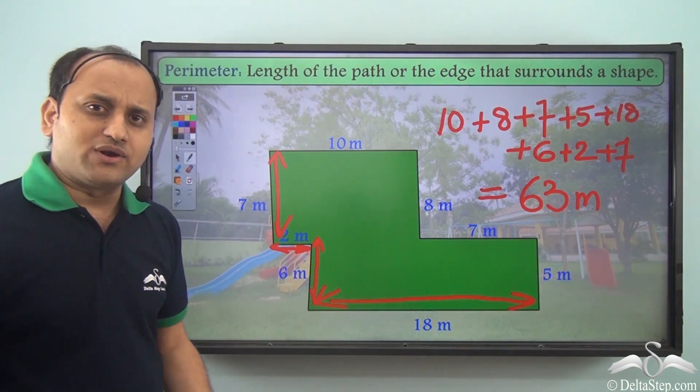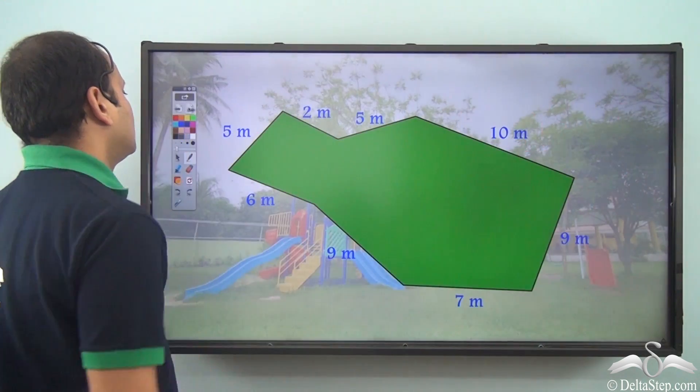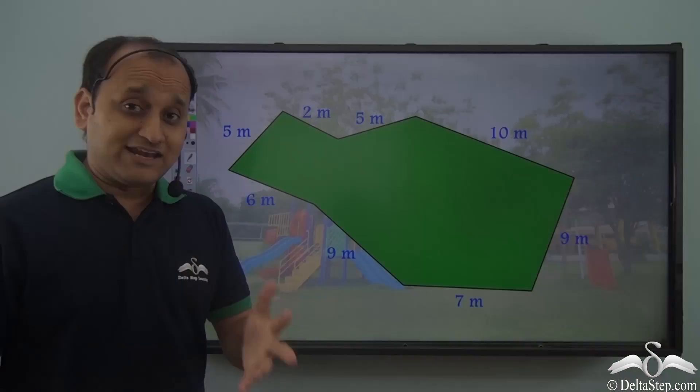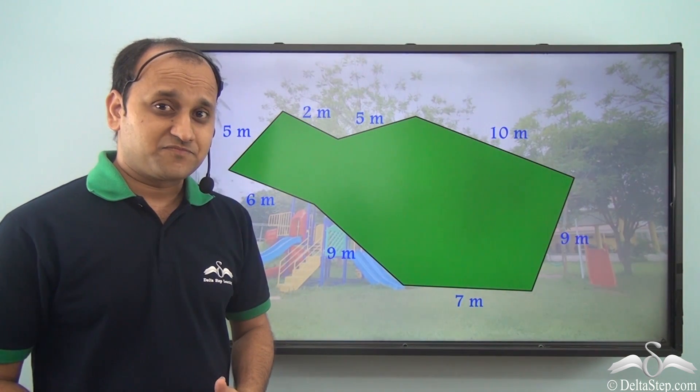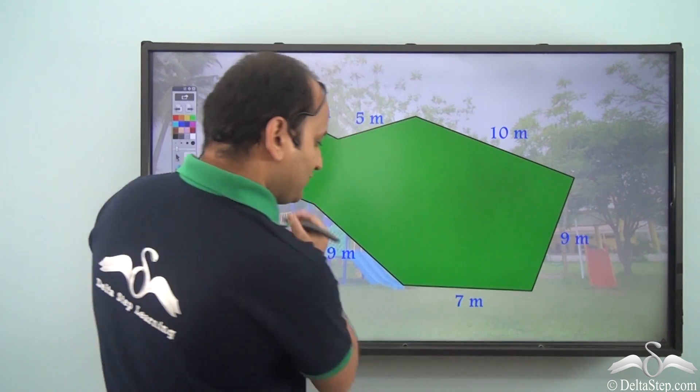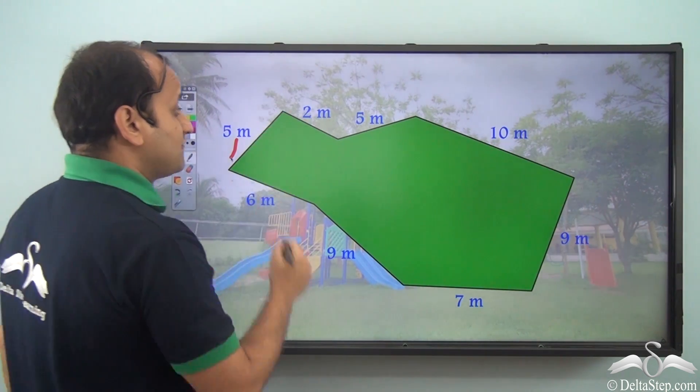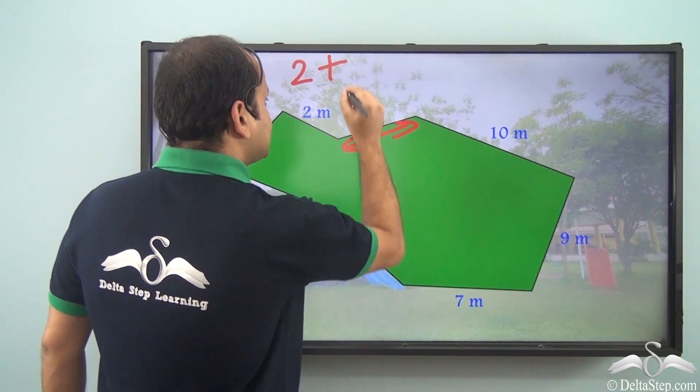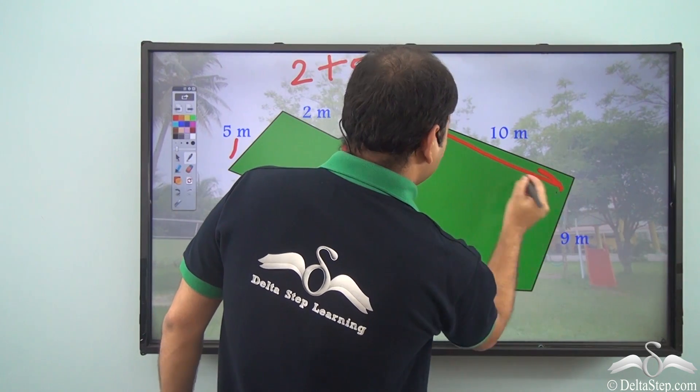So now that you know what is perimeter of a shape, can you find the perimeter of this particular shape? What do you think will be the answer? Well, let's calculate. It will be nothing but sum of all the sides, that is sum of length of all the sides. So we have 2 plus 5 for this, 5 plus this side is 10 meters. So 10.